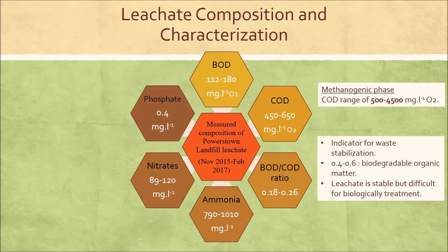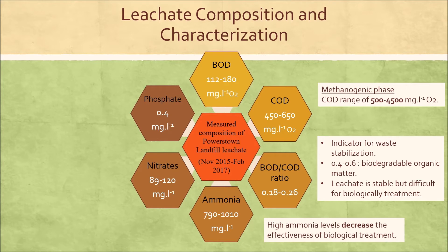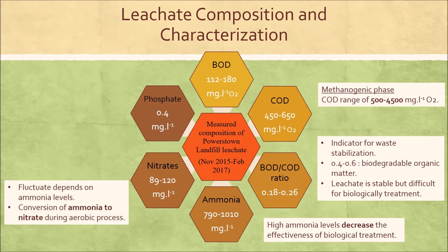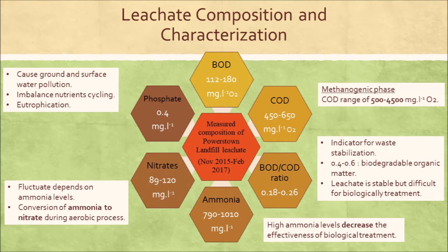Ammonia level is between 790 to 1,010 mg per liter. Pre-treatment may be necessary to lower the COD and BOD levels because high ammonia levels decrease the effectiveness of biological treatment. Nitrate level is 89 to 120 mg per liter, and can fluctuate depending on the concentration of ammonia due to the conversion of ammonia to nitrate during aerobic processes in the landfill. Lastly, the leachate contains 0.4 mg per liter of phosphate. Nitrate and phosphate can cause both ground and surface water pollution, as well as imbalance in nutrient cycling and cause eutrophication.